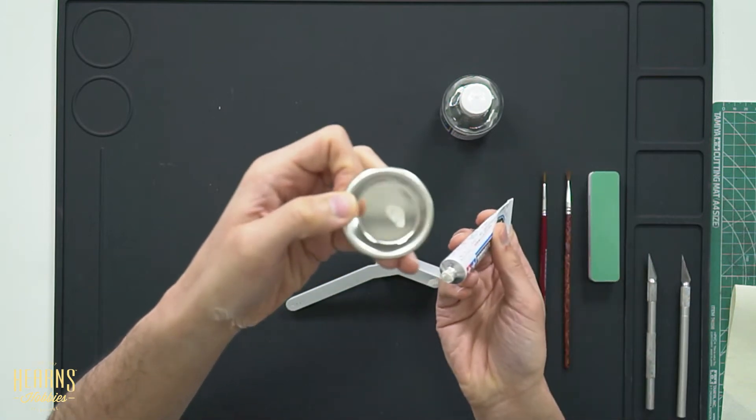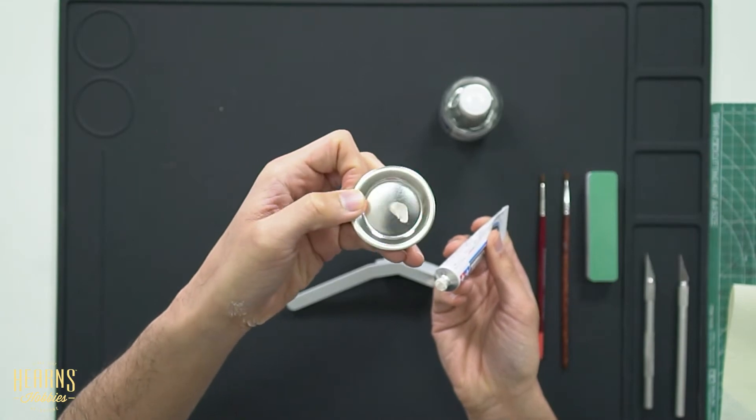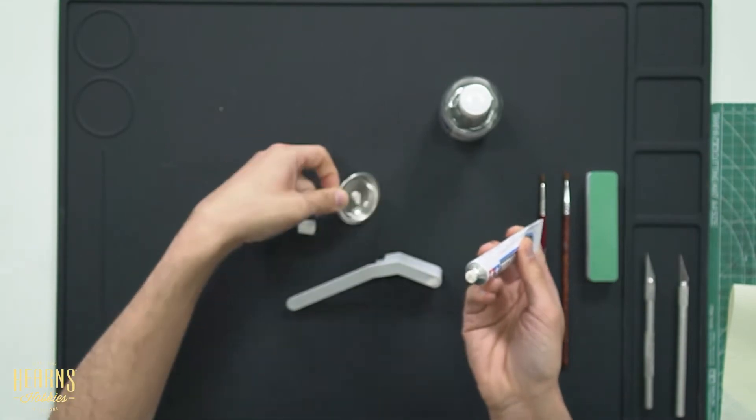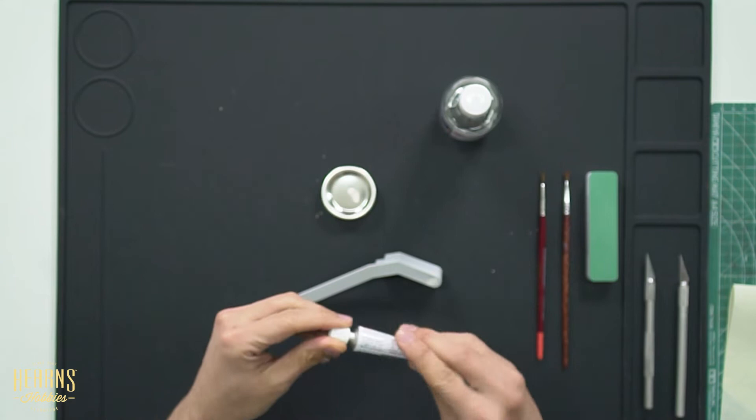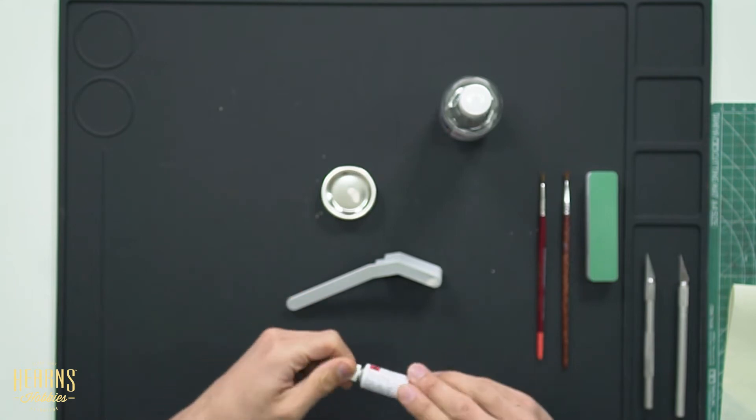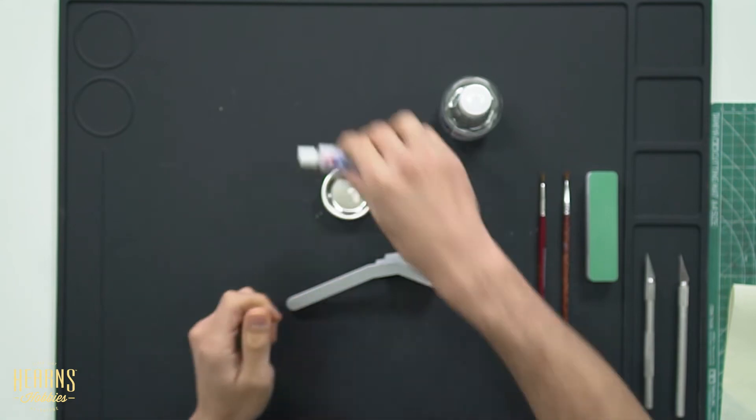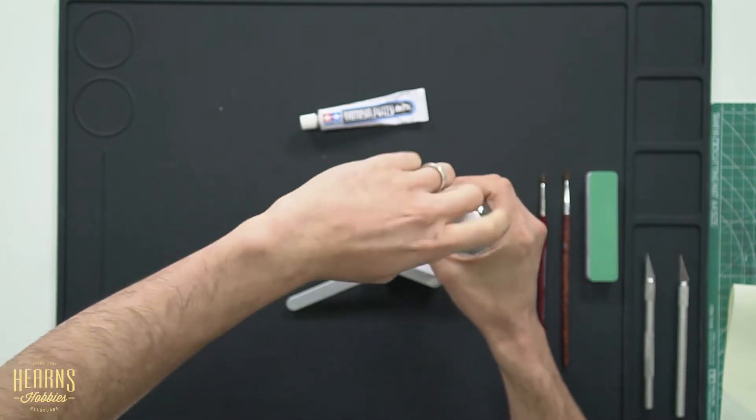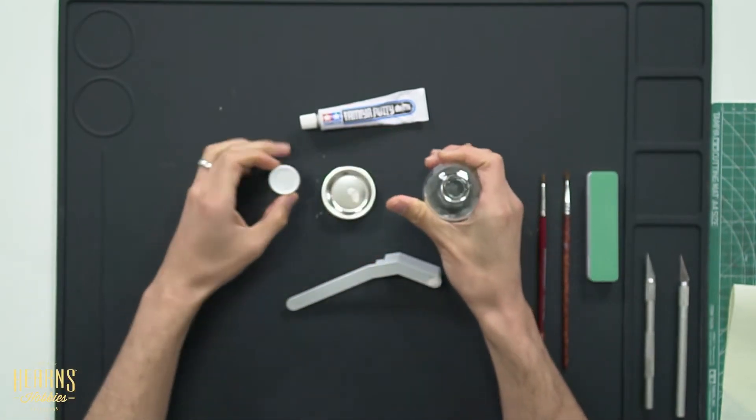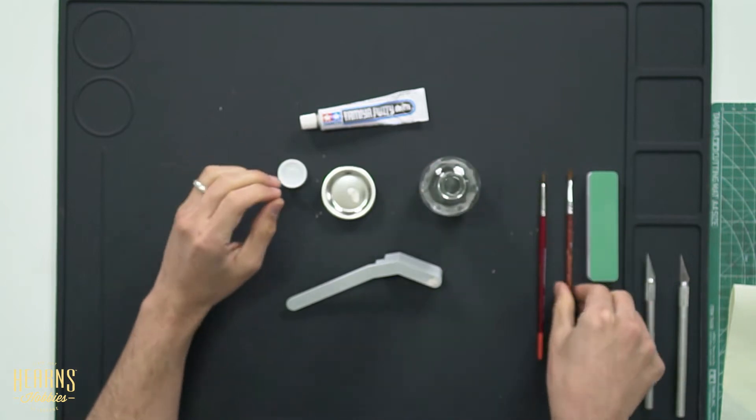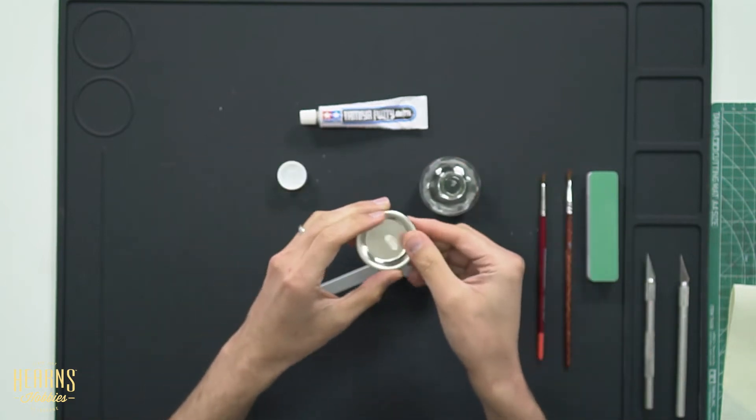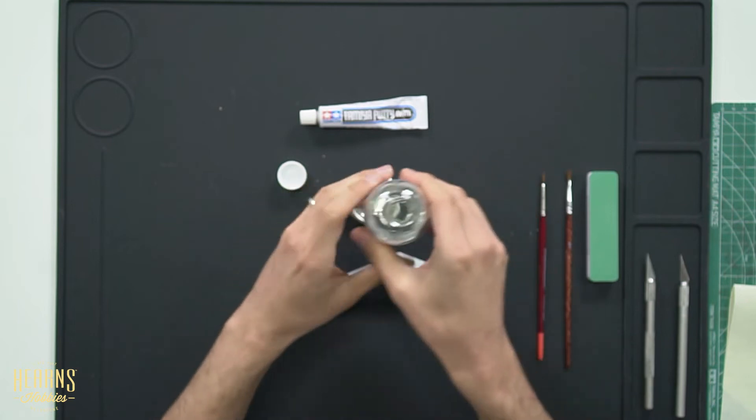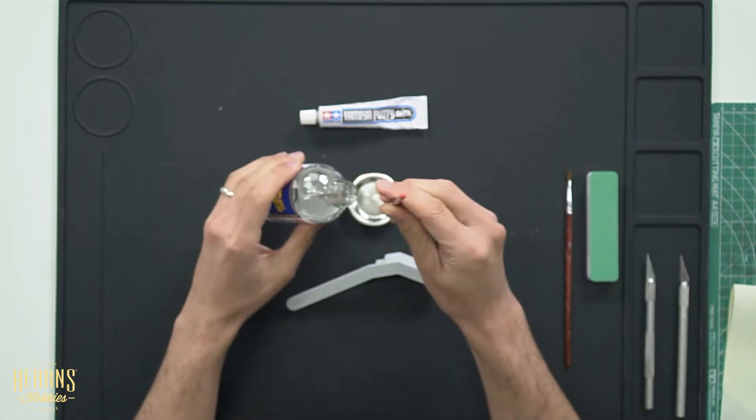Squeeze a little bit into this here. So you can see there we've got a dollop there. And then you apply the thinner in there depending on the consistency you want. Obviously if you put in less it'll be thick. You put in more it'll be super thin. So we'll start off with a little bit first.